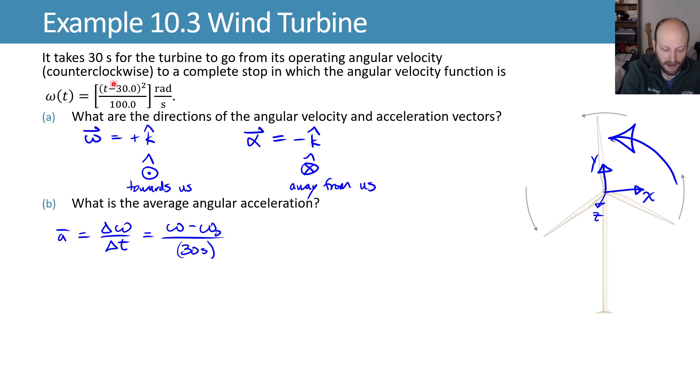We have a function here that we can evaluate at time equals zero and at time equals 30. We'll do that and get some values, which we can then evaluate to get a final answer of negative 0.3 radians per second squared.